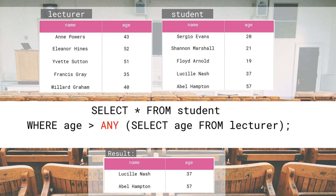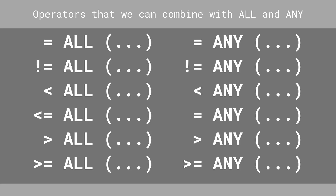Greater than is not the only operator that we can combine with ALL and ANY. We can also use equals, not equal to, less than, less than or equal to, and greater than or equal to. Alright, that sums up our video about ANY and ALL. Stay tuned for another video about SQL subqueries, leave a comment or a thumbs up, subscribe to our channel, and let's learn SQL together.